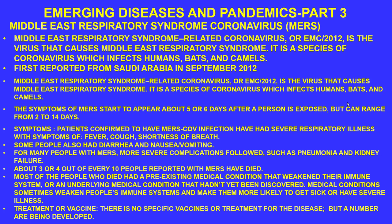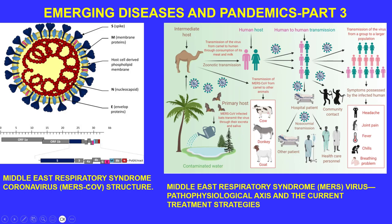Medical conditions that weaken the immune system make people more likely to experience severe illness. Currently, there is no specific vaccine or treatment for MERS — a number are under development. The MERS coronavirus structure is similar to other coronaviruses: it has a nucleocapsid, spike protein, and membrane proteins, and is an enveloped virus. The relatively simple RNA codes only for specific proteins needed for viral replication.